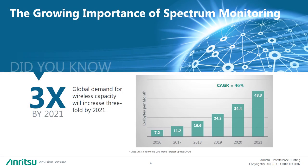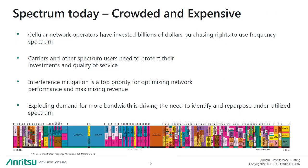In order to answer the first question — why do we need to care about interference — it's important to first realize that the global demand for wireless capacity compared to today will increase by three times by 2021. It's enough to take a look at this picture, showing the frequency allocations in the United States between 300 megahertz and 3 gigahertz. This frequency range is the most widely used spectrum for today's wireless communication systems, and as you can see, it's already incredibly crowded.